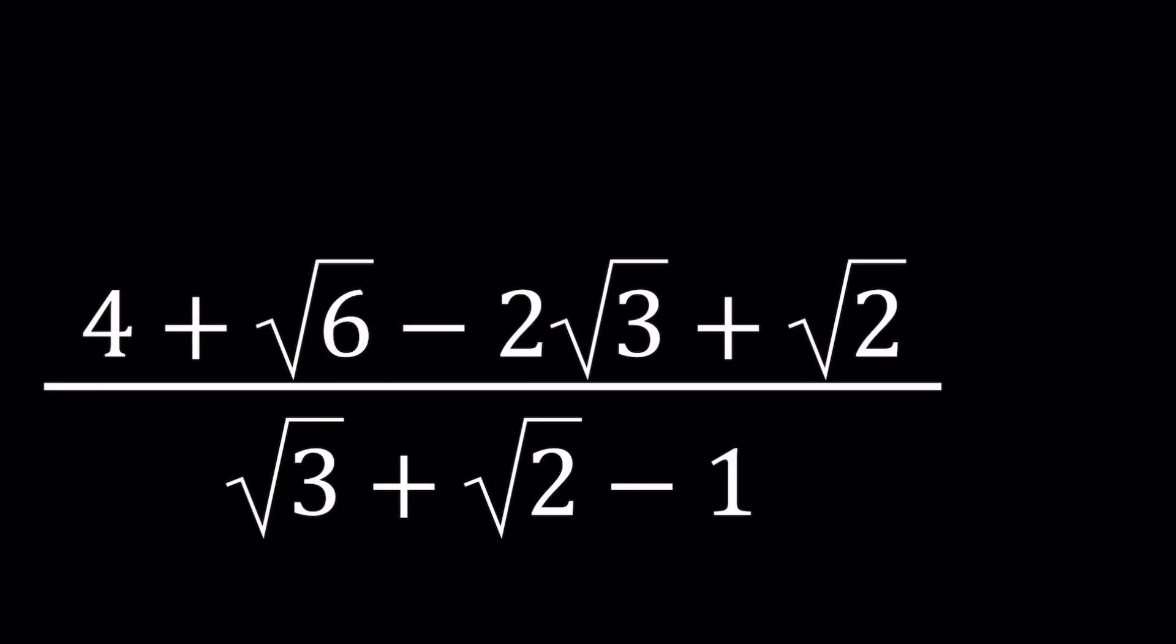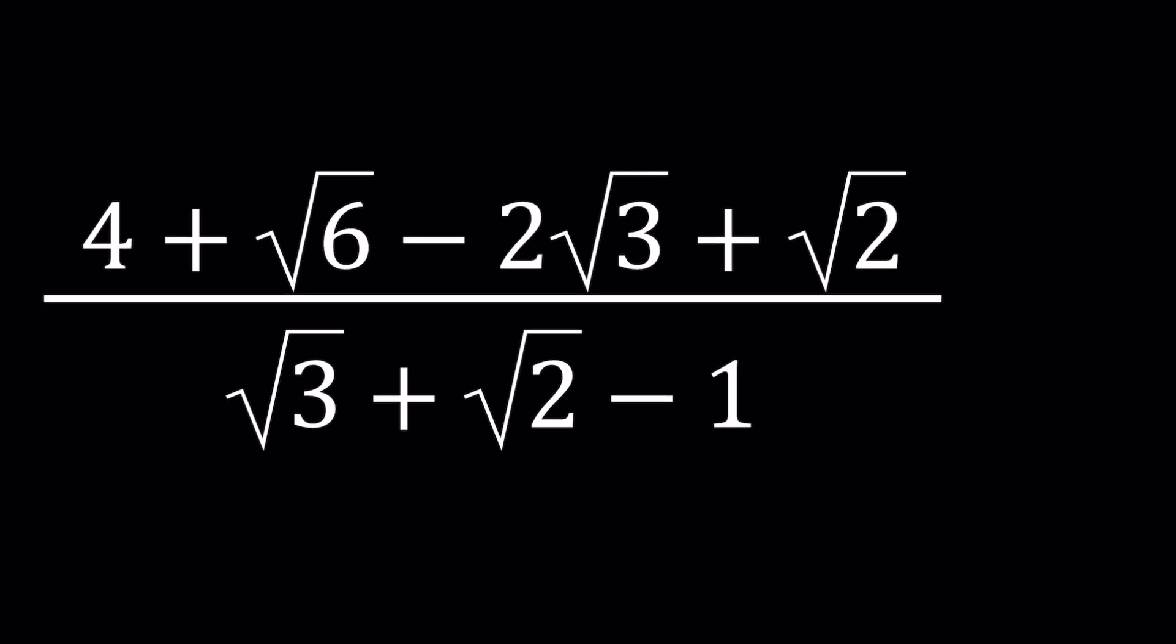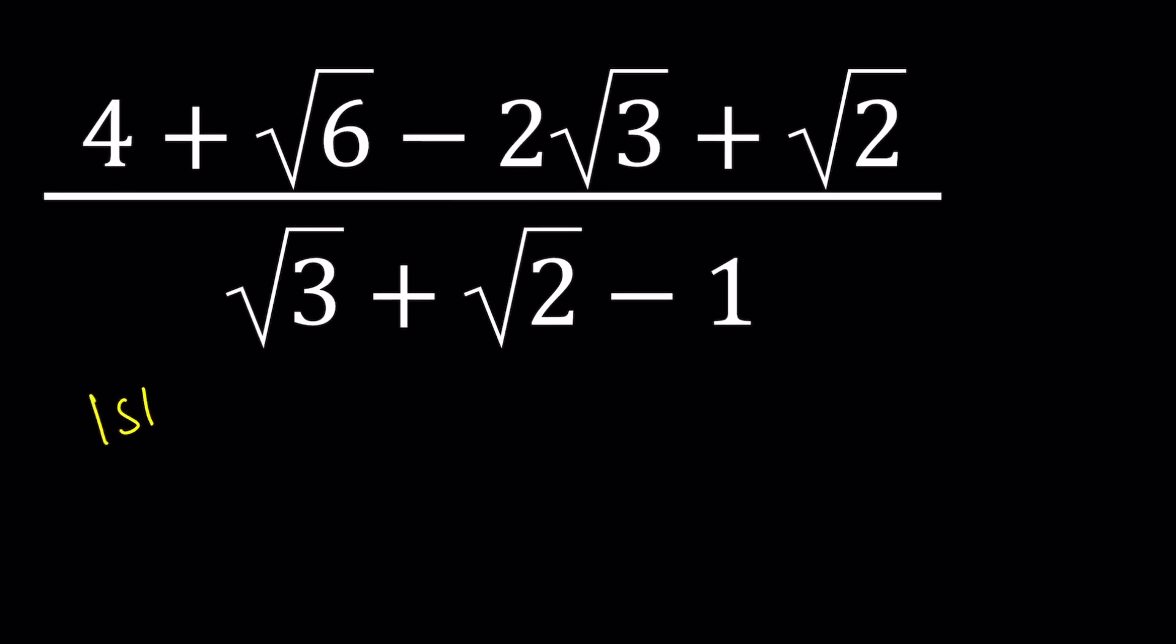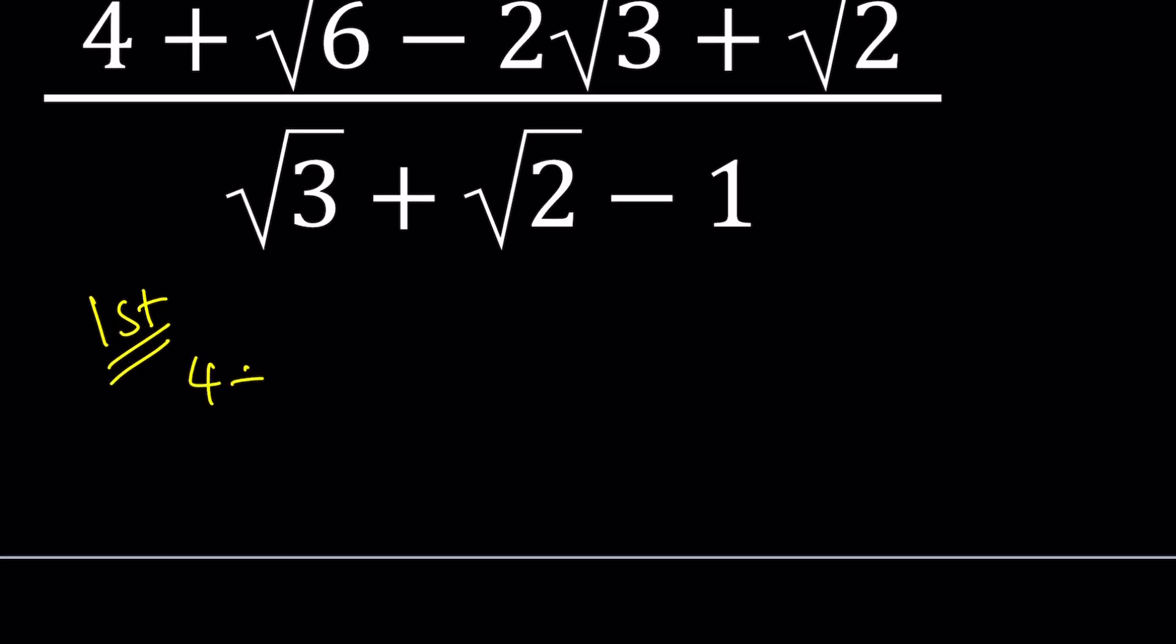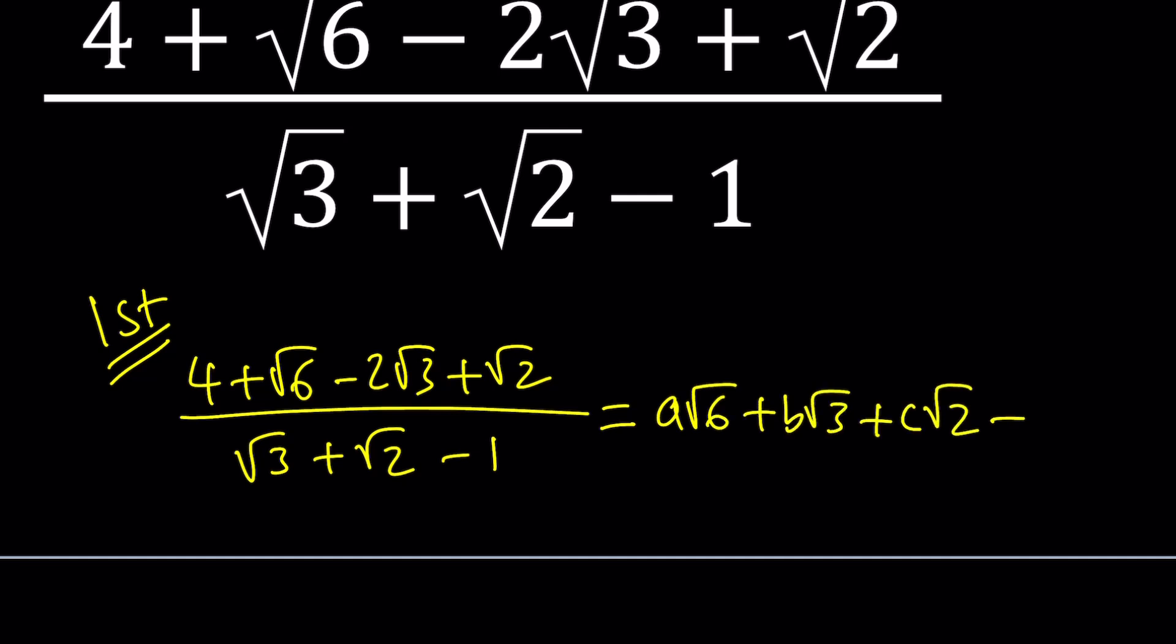Hello, everyone. In this video, we're going to be simplifying a radical expression. I'll be presenting two methods, and let's start with the first one. For my first method, I'm going to assume that this expression is equal to a simplified one that looks like this: A√6, B√3, plus C√2, plus D.